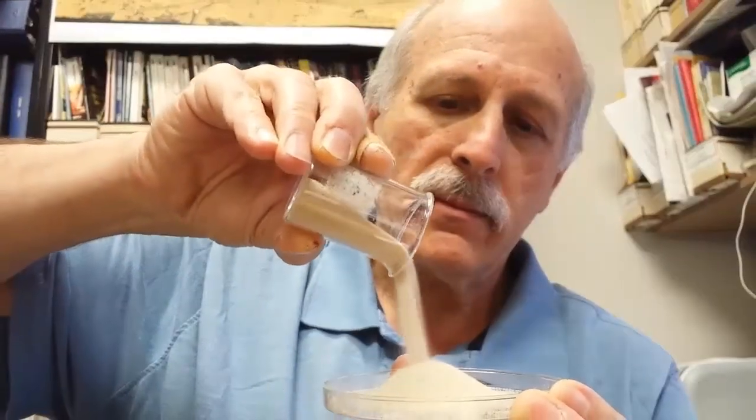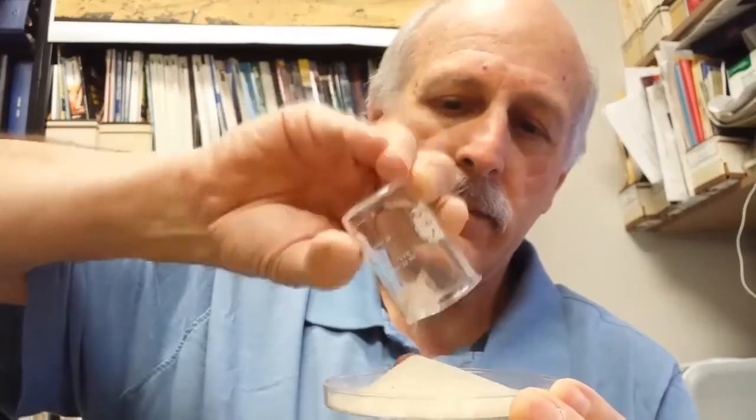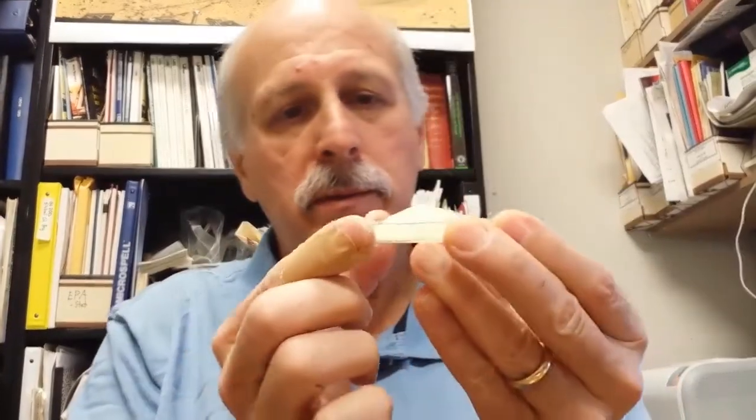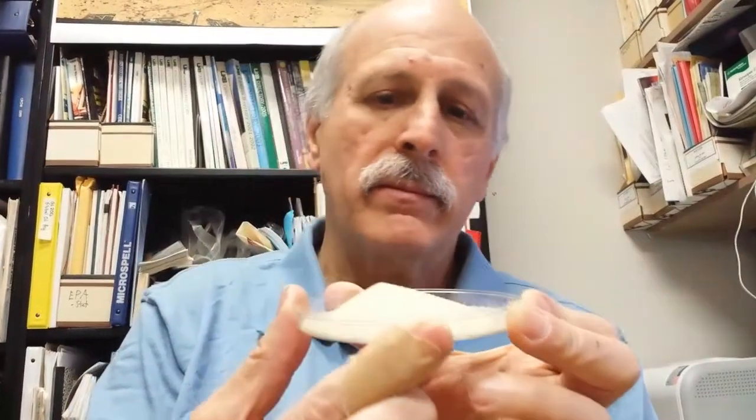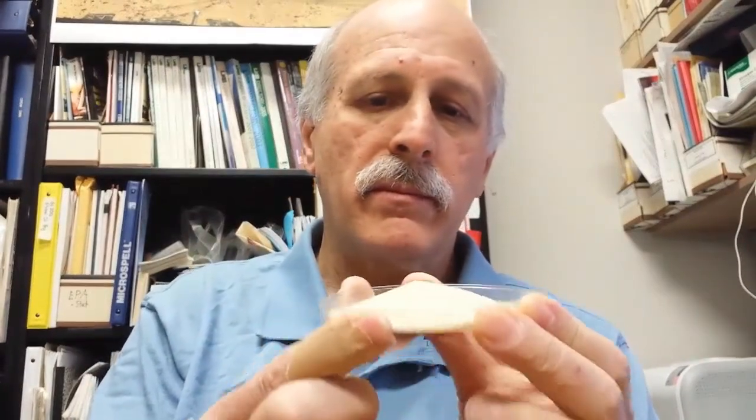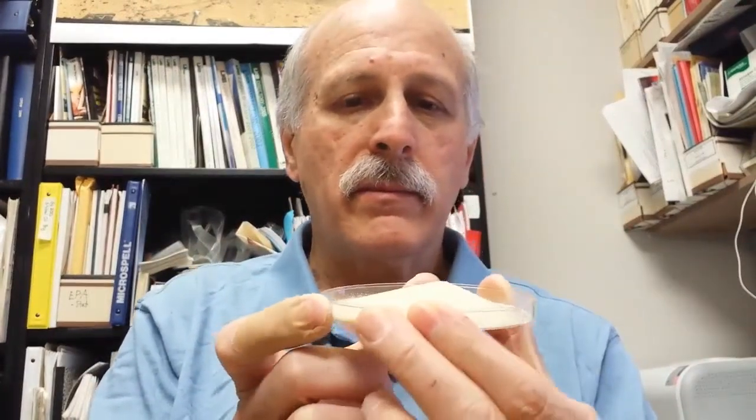The problem with this setup is that my students wouldn't be able to see very much if I simply poured it out from my position in front of the class, so I decided to make a home movie, and for that I would use my cell phone's video camera mounted on a tripod.